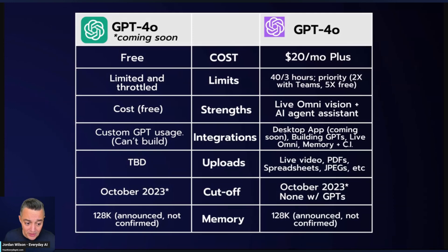As of today, the limit for ChatGPT Plus is 40 messages every three hours, unless you have a Teams account — which we do — then it's double that.